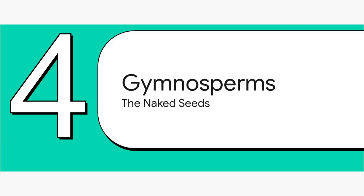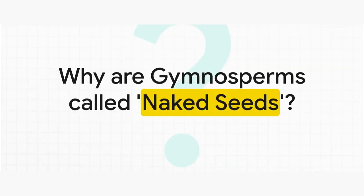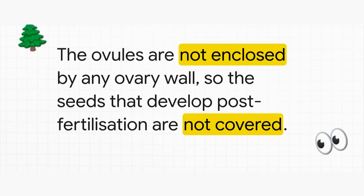The next level of evolution is here. We are now officially entering the world of seed-bearing plants. And we start with section 4: gymnosperms — the naked seeds. The name itself tells you almost everything you need to know. 'Gymnos' means naked and 'sperma' means seed. Why are they called naked seed plants? Because their ovules are not enclosed inside an ovary wall — they're just out in the open. So after fertilization, the seeds that develop are completely exposed. They're naked. And because there's no ovary, guess what else is missing? Fruit. Gymnosperms don't make fruits.